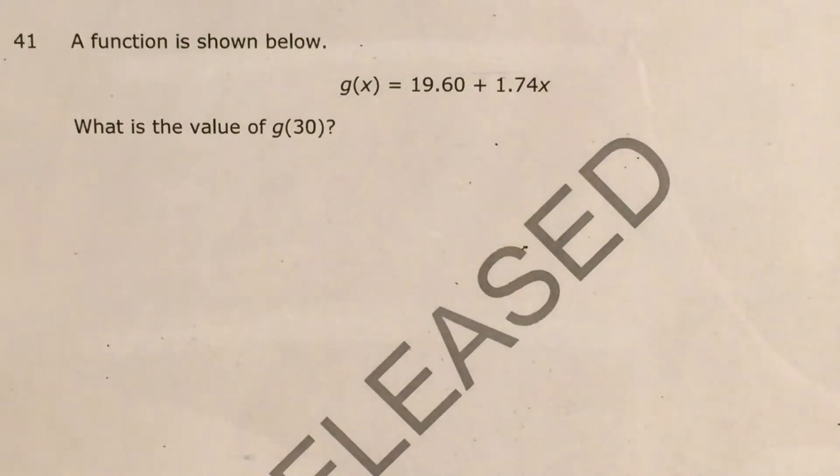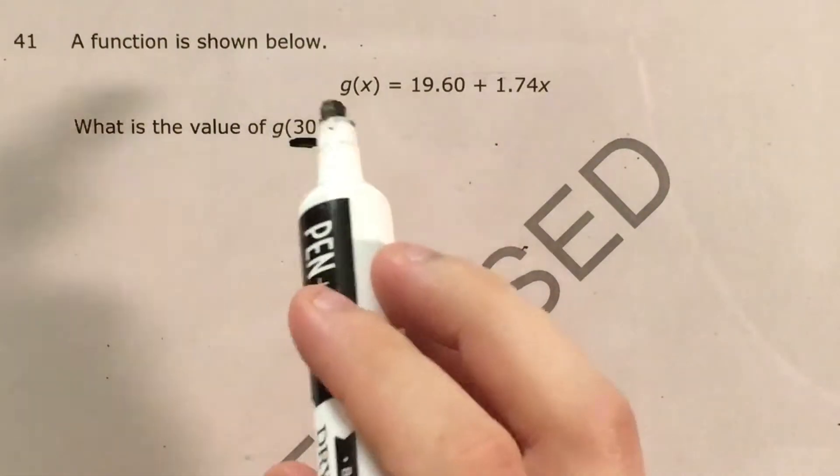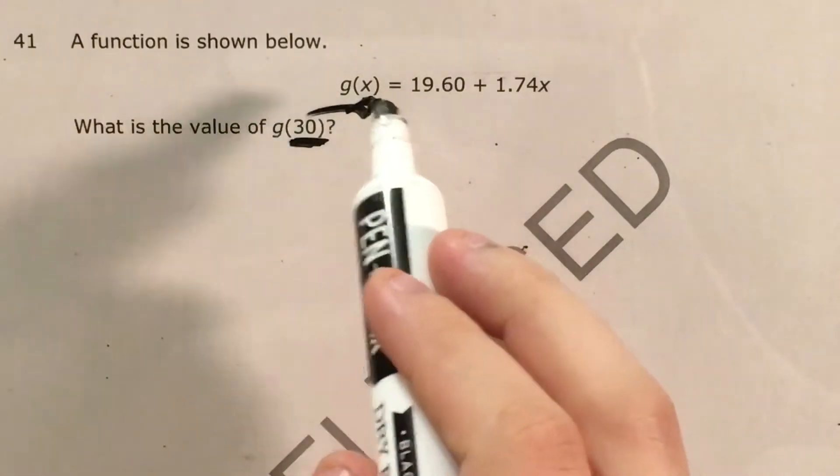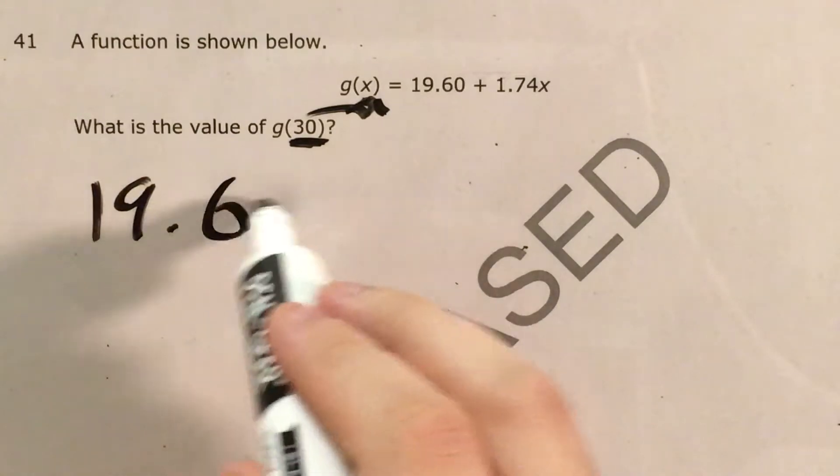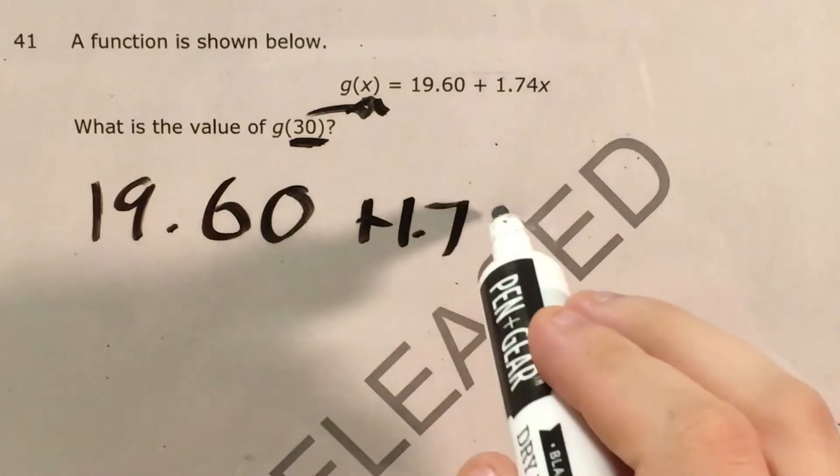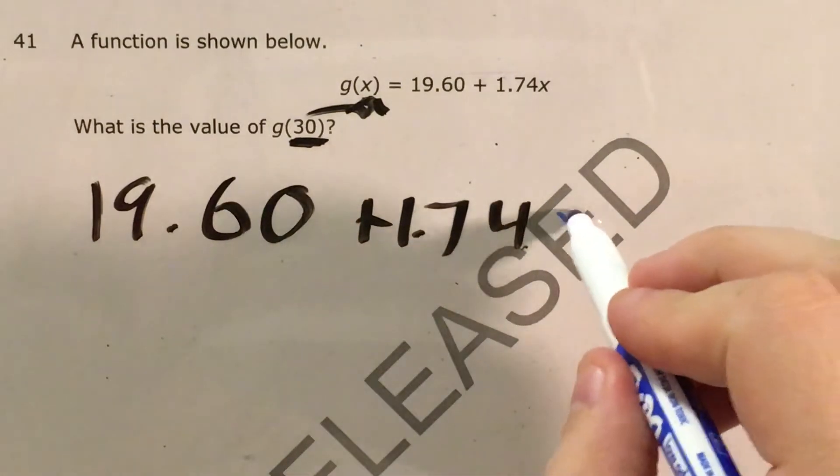So let's go ahead and do that because the idea of evaluating a function is that we take some number, like if it says g of 30, 30 is in place of x. So when I rewrite this function to evaluate it, I'm going to replace everywhere I see an x with the number that I'm evaluating for. So 30.